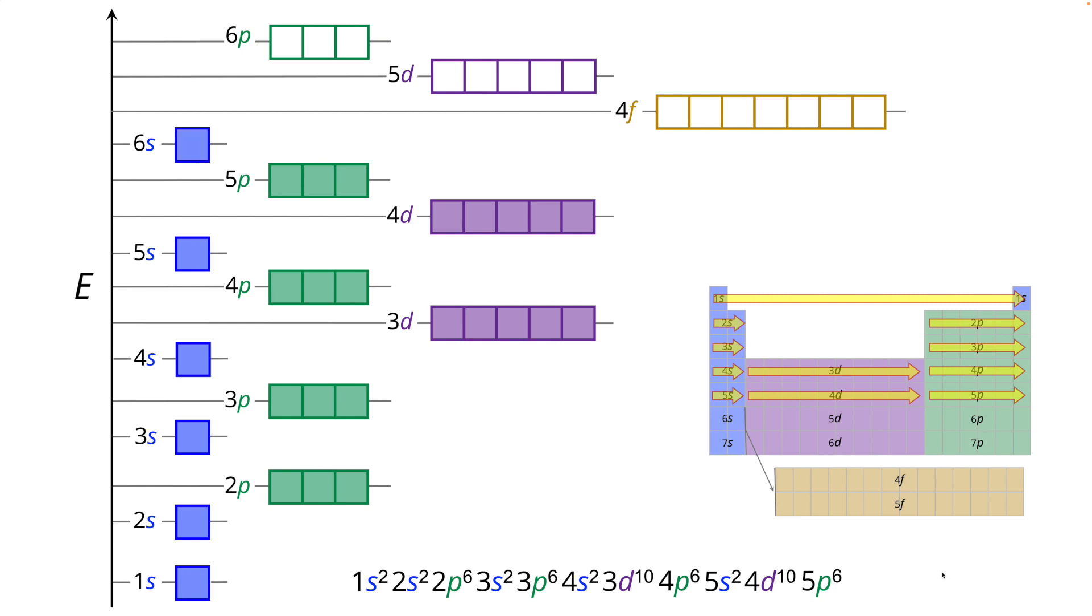We're now into the sixth row and it's 6s2 first. Next, we actually go down to the lanthanides, which is 4f14. So the f subshell has seven orbitals. Seven times two is 14. So that's the reason for that capacity.